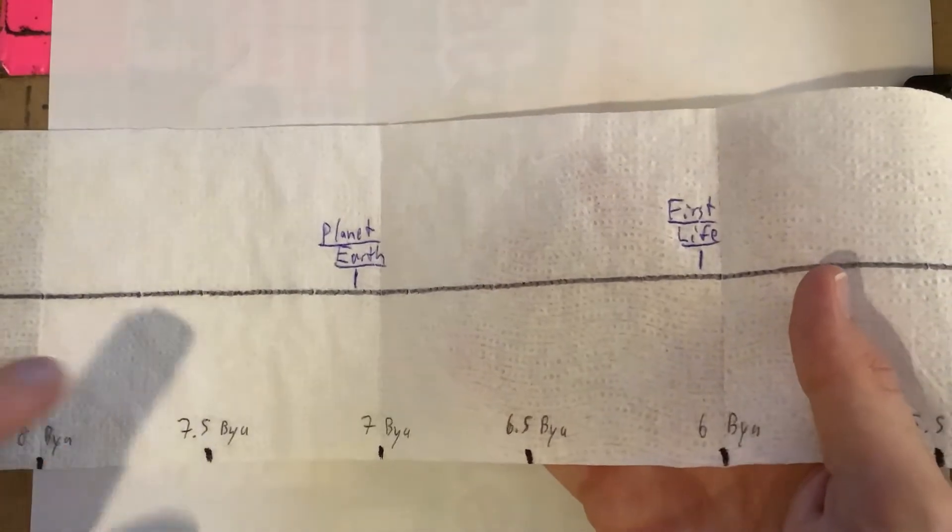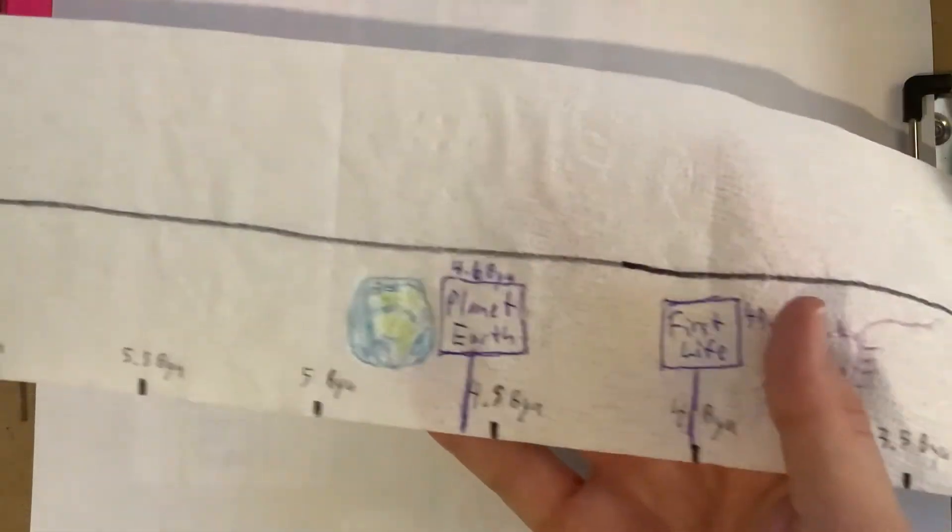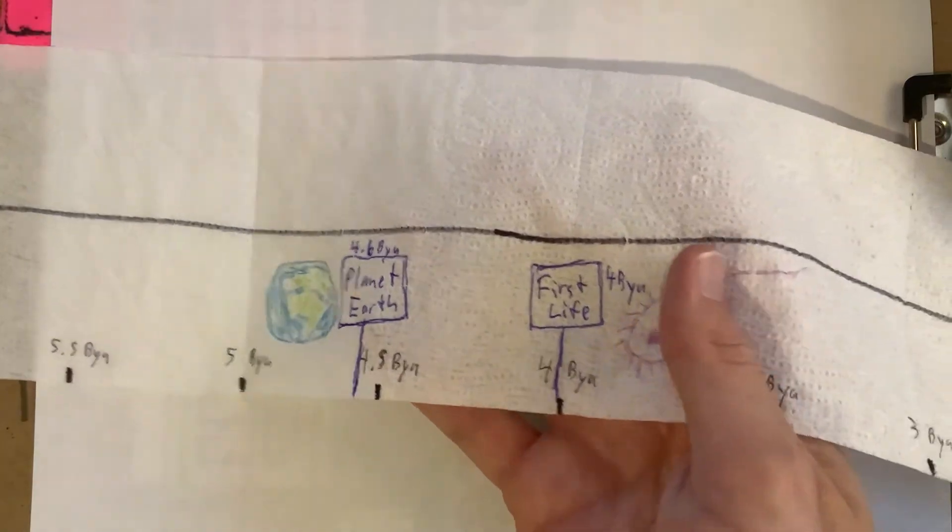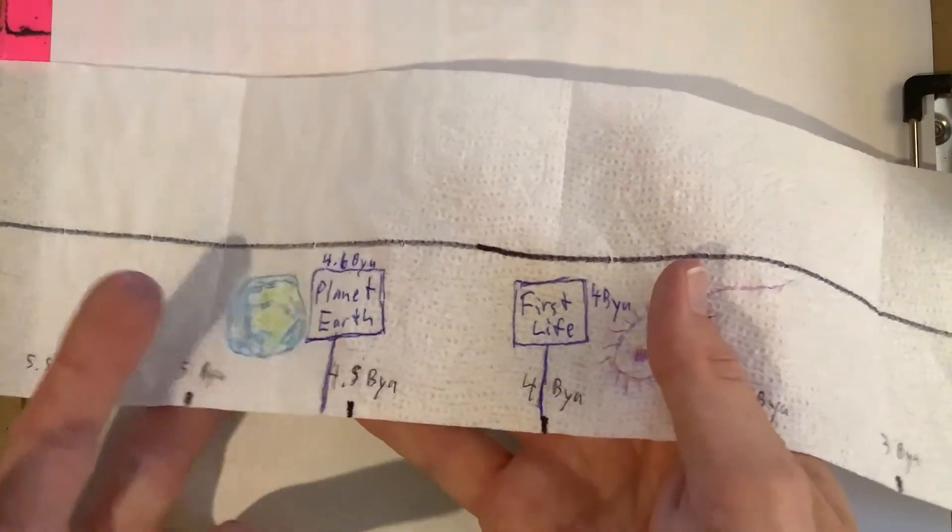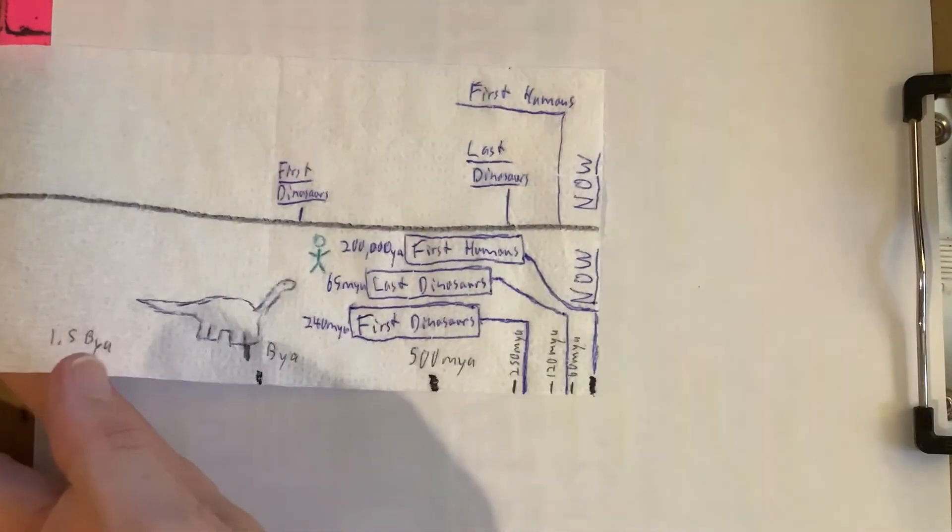And again I was way off. I thought planet Earth was about 7 billion years ago and first life about 6 billion years ago. Turns out I was way off with that. Planet Earth didn't form until about 4.5 to 4.6 billion years ago, and first life was 4 billion years ago.